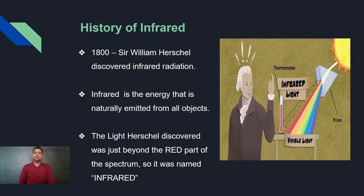What is infrared? Infrared energy is the energy that is naturally emitted by the object. In 1800 century, Sir William Herschel discovered the infrared. In his experiment, he discovered that there is light beyond the red portion of the spectrum, so he named it as infrared.